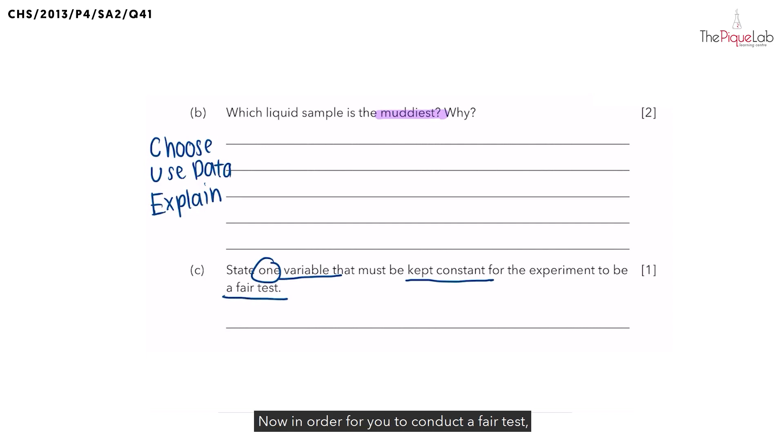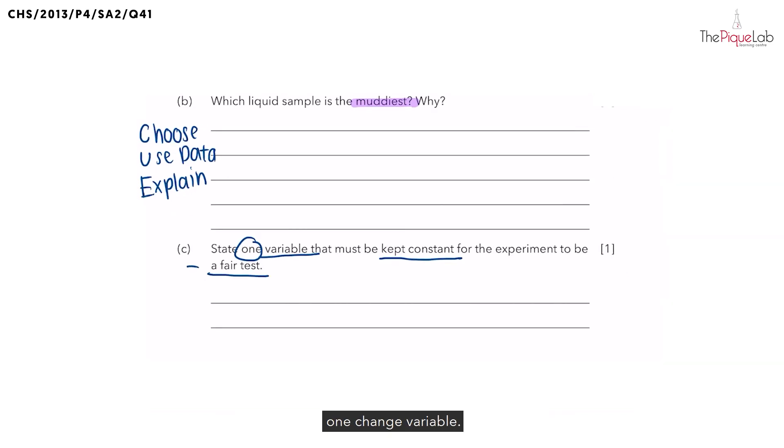Now, in order for you to conduct a fair test, students need to know that there must only be one change variable. So I'll write this here, only one change variable. And in this experiment, what is the change variable? It is the type of liquid.